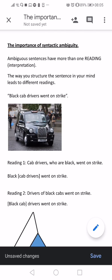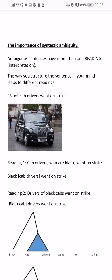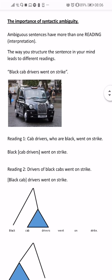Now the same thing happens in English. For example, we've got this example here: 'Black cab drivers went on strike.' If you can think of two different ways in which this sentence could be interpreted, then you understand syntactic ambiguity. Each interpretation is a reference to how the syntax is structured differently in your mind. A black cab, as you can see in the photo, is a sort of taxi very common in London. The first reading is: cab drivers who are black went on strike. The second reading is: drivers of black cabs — this sort of taxi — went on strike.